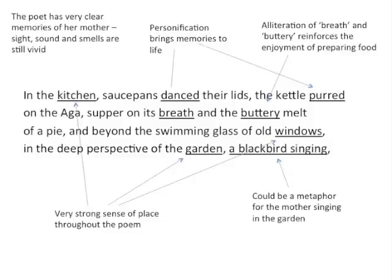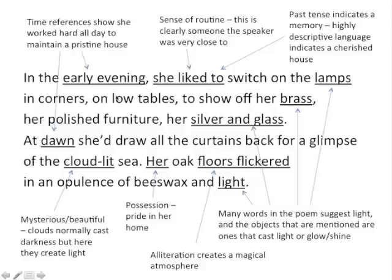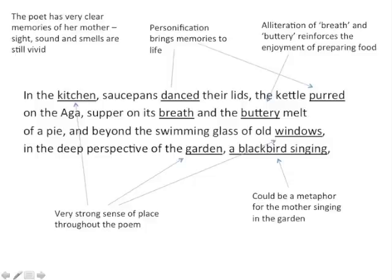As we move on into this next section, we can see that the poet has very clear memories of her mother — sight, sound and smells are still extremely vivid. There's also a very strong sense of place throughout the poem: the kitchen, the windows, the garden. We've also got personification: 'the saucepans danced their lids, the kettle purred' — very positive images that bring those memories to life. The alliteration of 'breath and buttery' reinforces the enjoyment of preparing food. And the vivid memory of the garden means she can still hear the blackbird singing, which could be a metaphor for the mother herself singing in the garden.